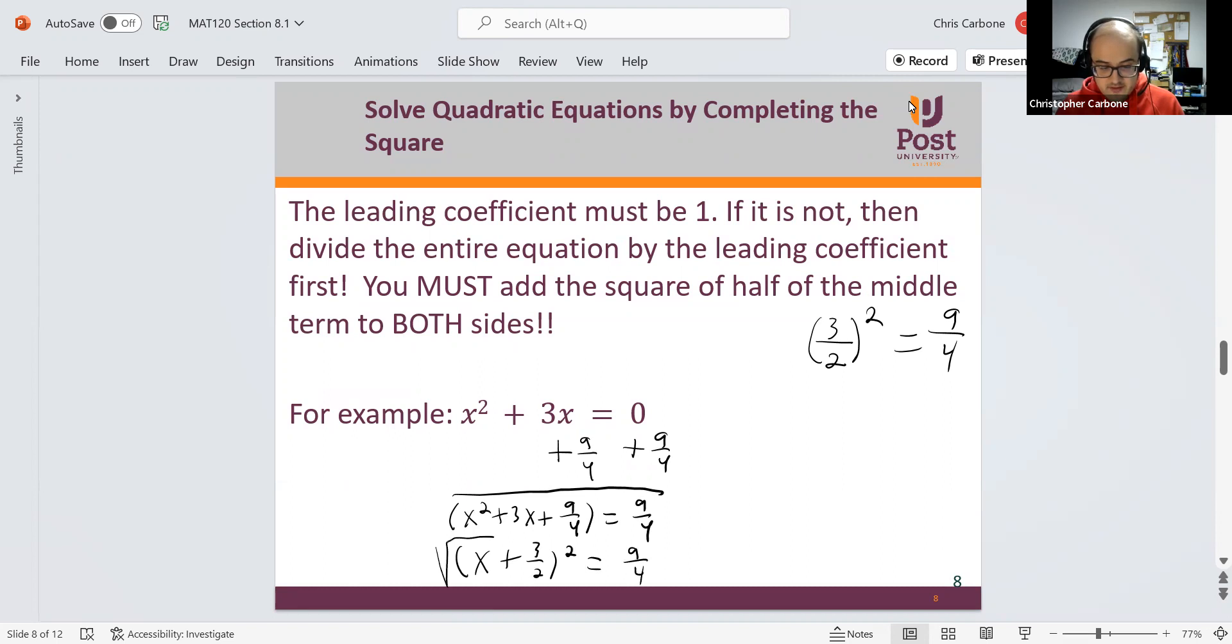And now when we take the square root of both sides, we get x plus 3 halves equals positive or negative 3 halves. And now we could subtract 3 halves. So x would be negative 3 halves plus or minus 3 halves. So the two solutions we would get, if we're subtracting these, we get negative 3. If we were to add them, we get 0.